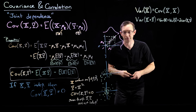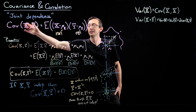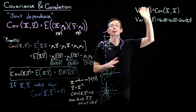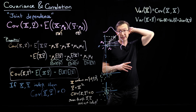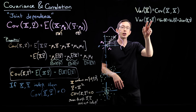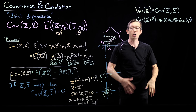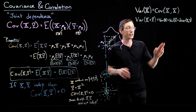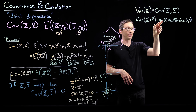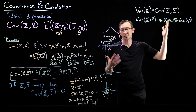I want you to convince yourself of this: take x + y, plug it into both places in the covariance definition, expand it out, and verify you get Var(x) + Var(y) + 2·Cov(x, y). If x and y are independent, the covariance term is zero and you get Var(x) + Var(y). If they're dependent, you get this extra covariance term.